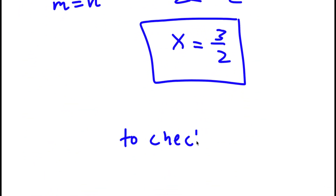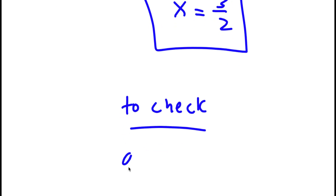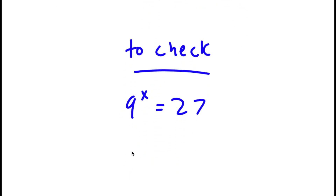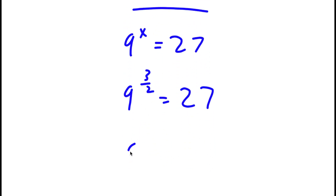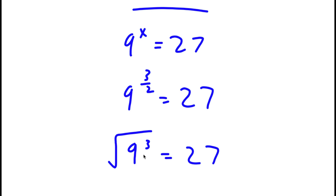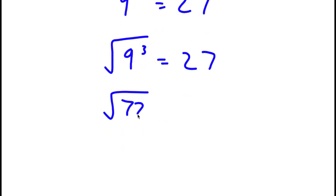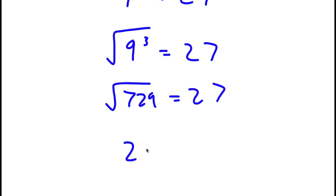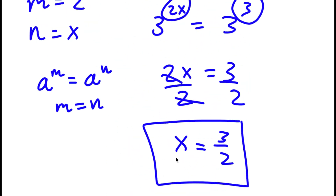To check: 9 to the power of 3 over 2 should equal 27. I can rewrite this as the square root of 9 to the power of 3. First, 9 to the power of 3 equals 729. The square root of 729 equals 27. So 27 equals 27 — the solution is confirmed.